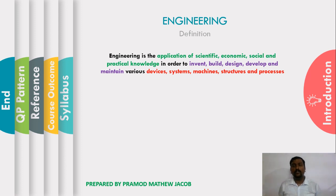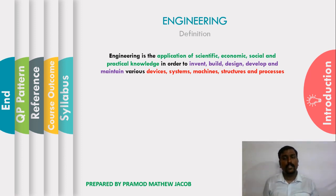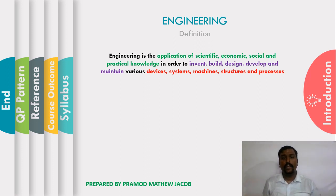Economic knowledge means we have to develop or model a system in such a way that it should be cost effective — providing maximum efficiency with minimal cost. The third concern is social aspects: the product we design should be beneficial to society, should not affect society in any harmful manner, and should be used for helping the entire society.